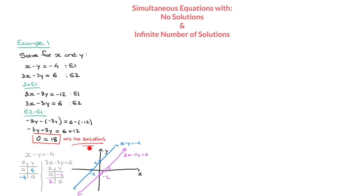Although this sketch is far from perfect, hopefully you can see that the two lines drawn are parallel, and consequently they will never intersect. When solving simultaneous equations, the solutions x and y can be thought of as the coordinates of the point of intersection of the two lines. Since these two lines are parallel, they'll never intersect, so the pair has no solution.